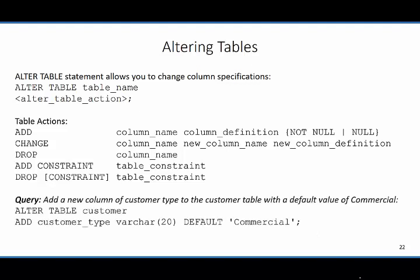So let's look at an example where we're asked to add a new column of customer type to the customer table with a default value of commercial. So we could say ALTER TABLE, and then we're going to alter the table of the customer, and then we're going to add the customer_type attribute or column. We're going to say the data type of this is going to be varchar(20), and the default is going to be commercial. So every time I insert a new record, it's going to be commercial unless I specify differently.